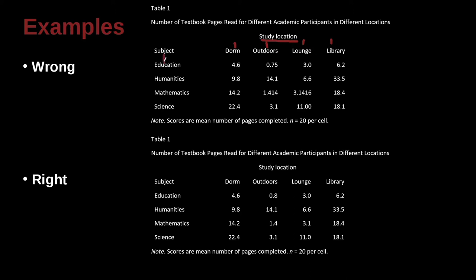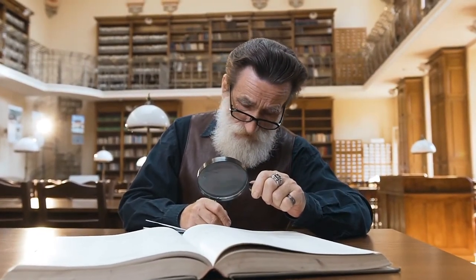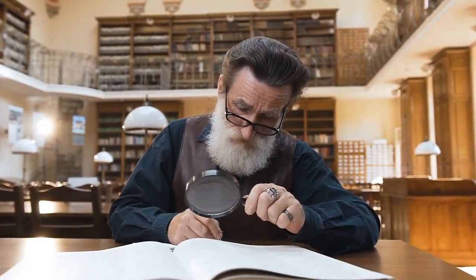We have our subjects here, education, humanities, mathematics. So this looks very clear. What's the problem? We have a nice note here, scores are mean number of pages completed, and the subgroup n equals 20 per cell. So each cell has 20 participants. A little bit hard to see what the problem here is. But if we look a little bit closely at the numbers, we can see what the problem is.